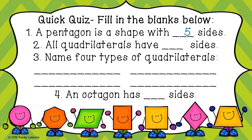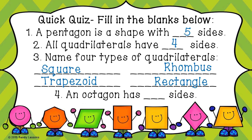It's a quick quiz — fill in the blanks. A pentagon is a shape with five sides. All quadrilaterals have four sides. Name four types of quadrilaterals: square, trapezoid, rhombus, and rectangle. An octagon has eight sides.